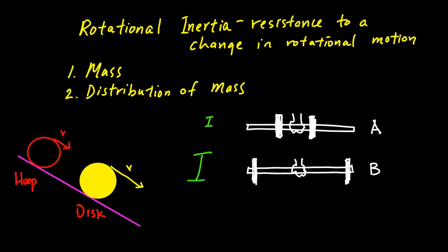A classic demonstration is a race between a hoop and a disc released from the same point on a ramp. The disc always reaches the bottom first because it has a smaller rotational inertia than the hoop. The hoop's mass is all far from the axis of rotation, giving it large rotational inertia. The disc's mass is spread out with some closer to the center, giving it smaller rotational inertia.